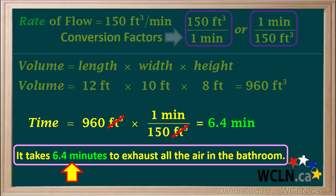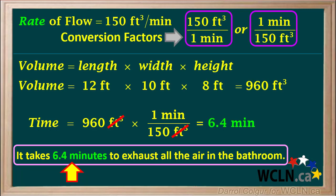So it takes 6.4 minutes, or a little less than 6.5 minutes, to exhaust all the air in the bathroom if the fan is running at high speed. Here is the full answer to this question all on one page — it would be good to review this and make sure it makes sense to you. Notice how we used dimensional analysis, or manipulation of units, to help set this solution up.